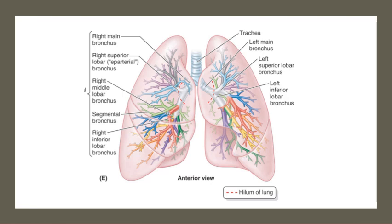This slide shows the branches of the main bronchi. From the trachea, it branches into the right and left main bronchus. There are three lobar bronchi on the right side — right superior, right middle, and right inferior lobar bronchus. On the left side, since there are only two lobes, there are two branches: the left superior and left inferior lobar bronchus.